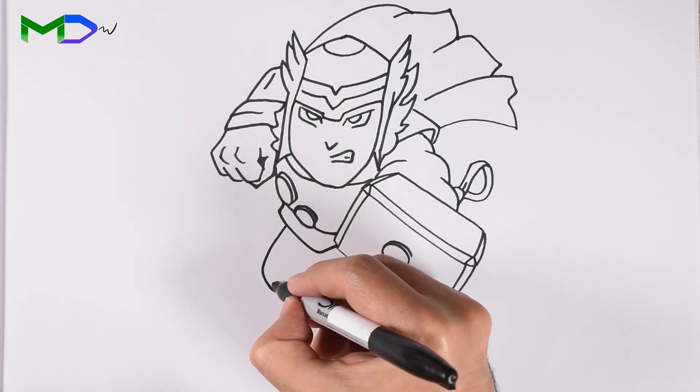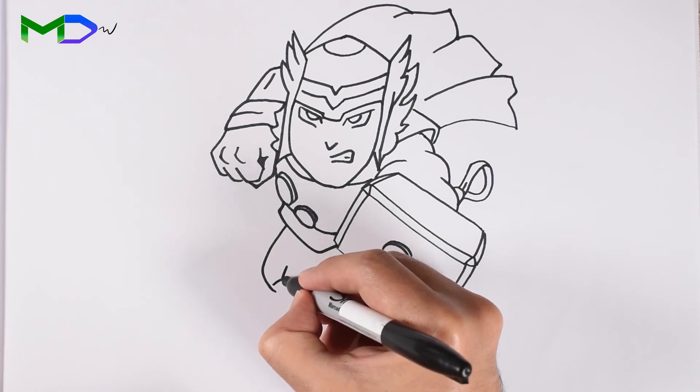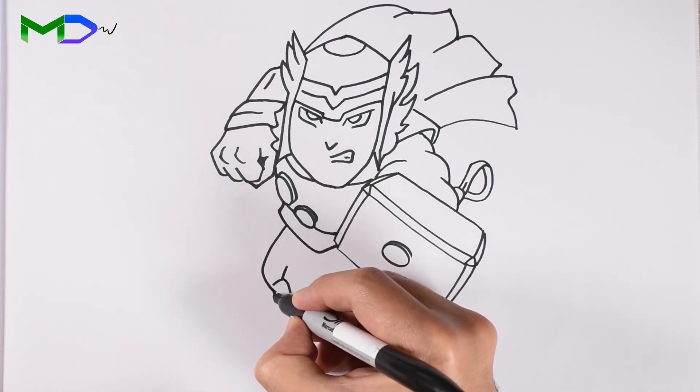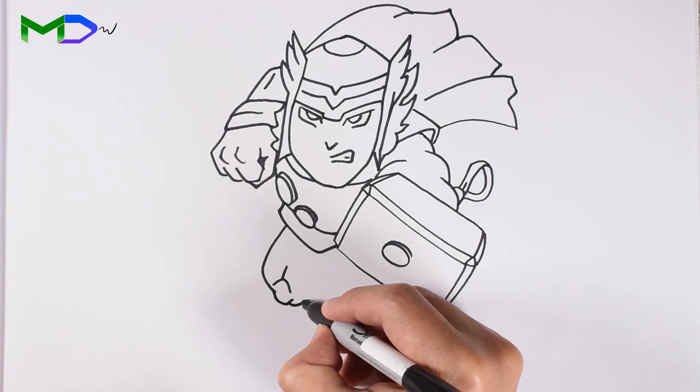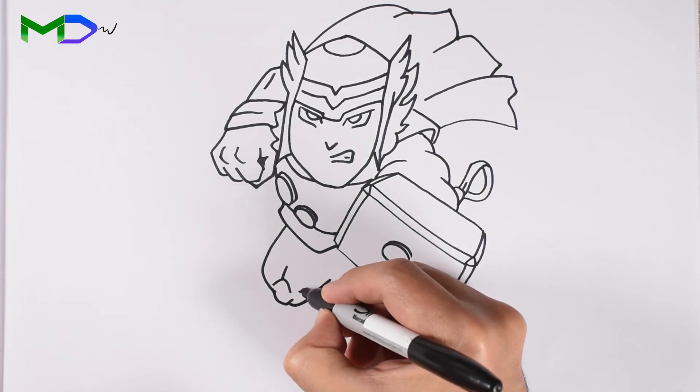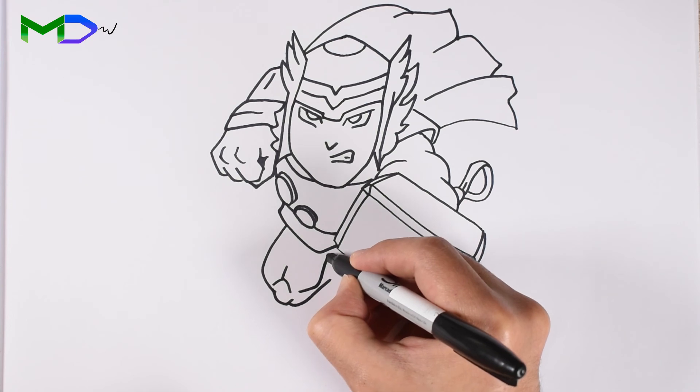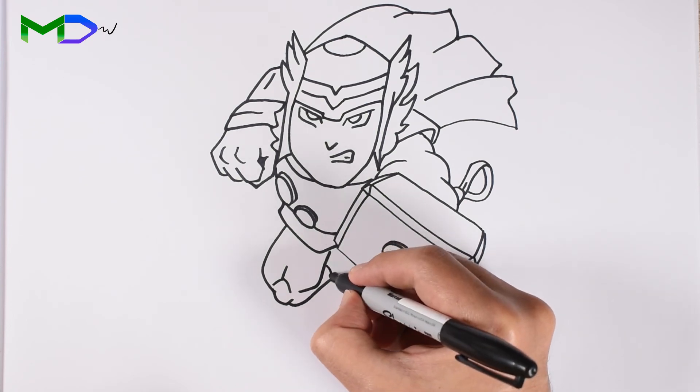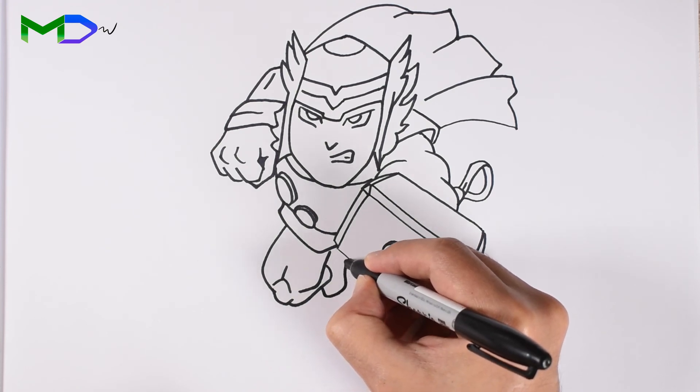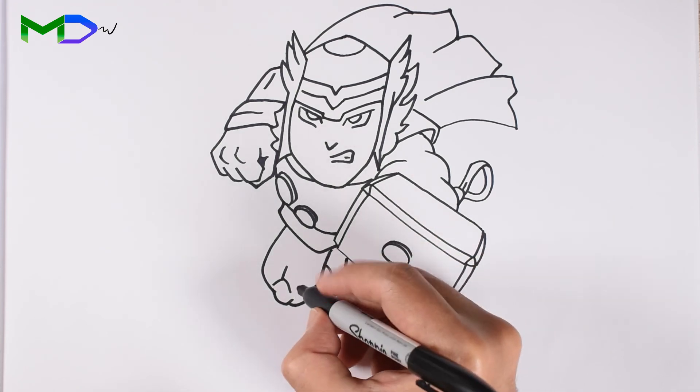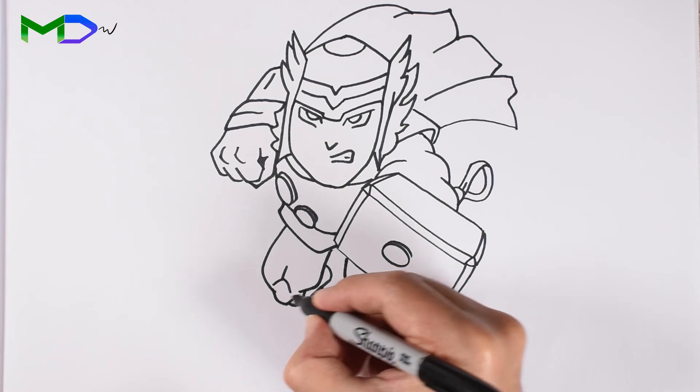Draw some lines to create the muscles, then the knee. Then going up again. Finish the shape of the leg. And then the foot. Trim the section to create the boot.